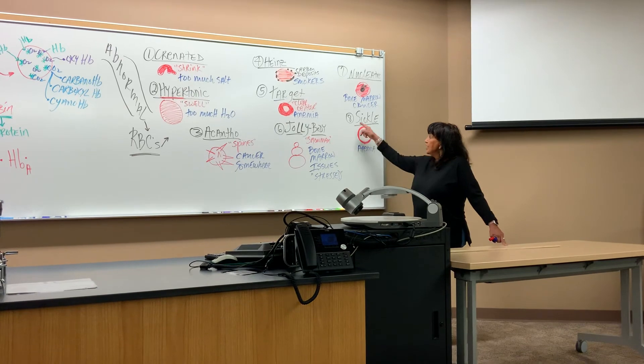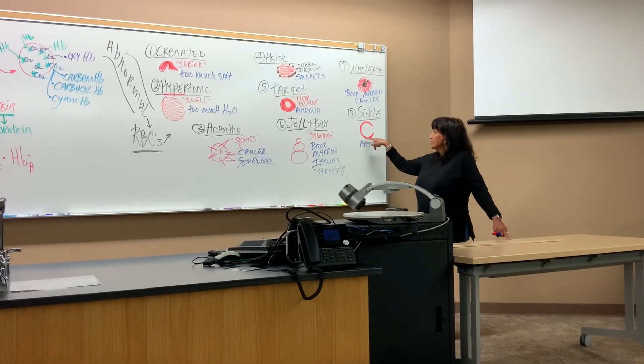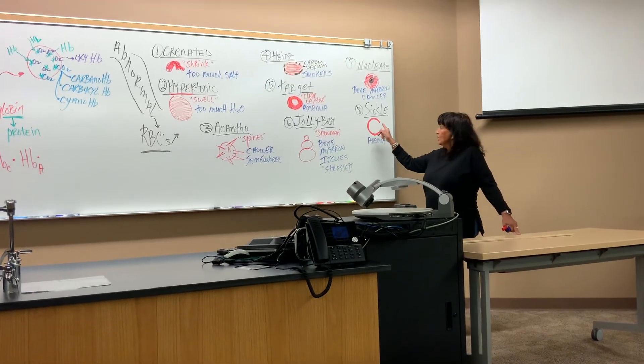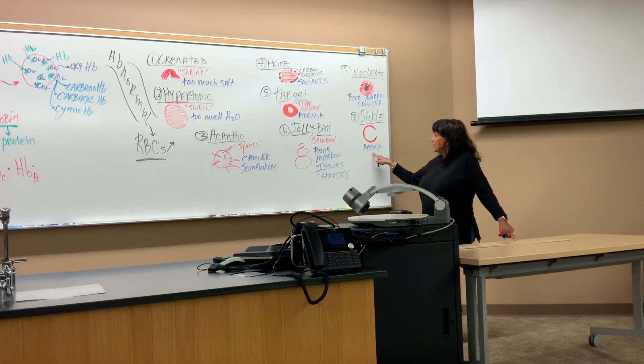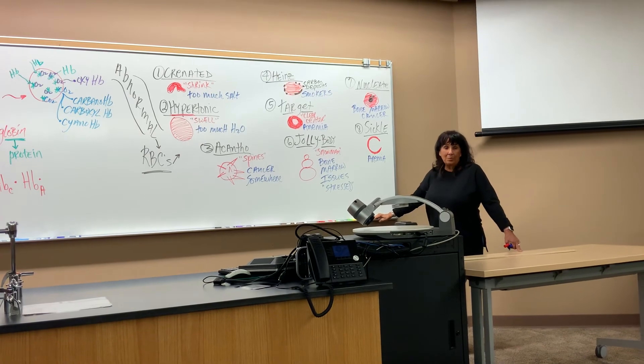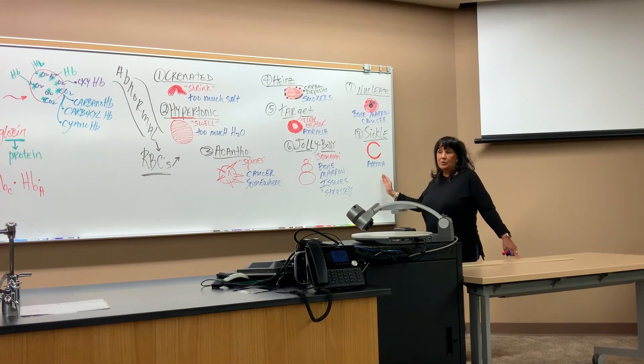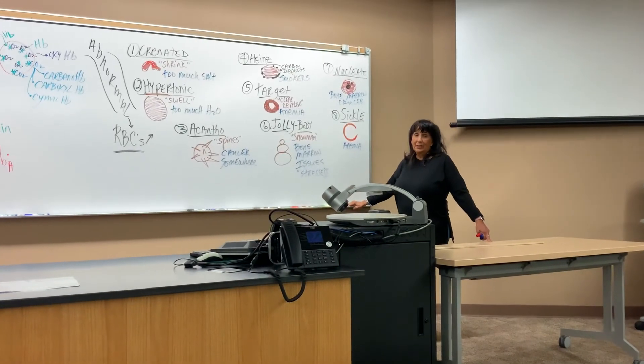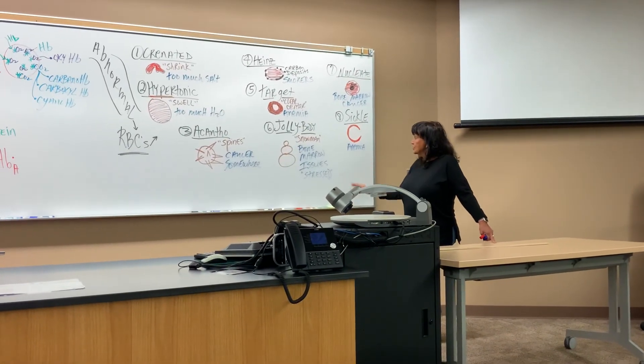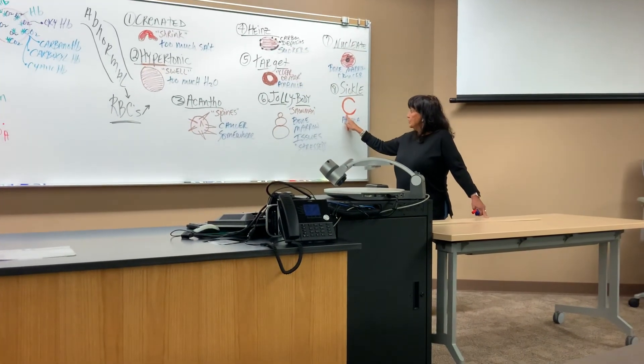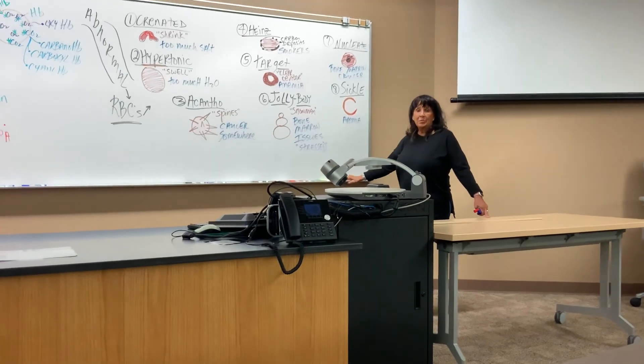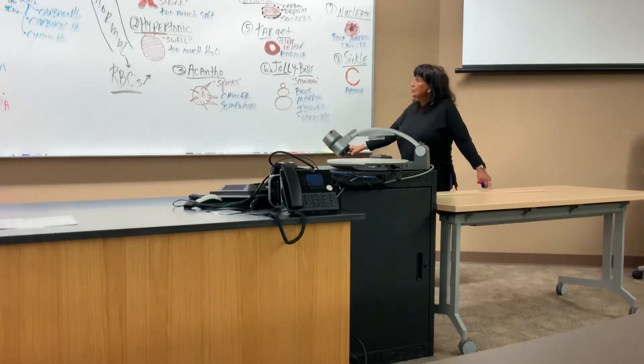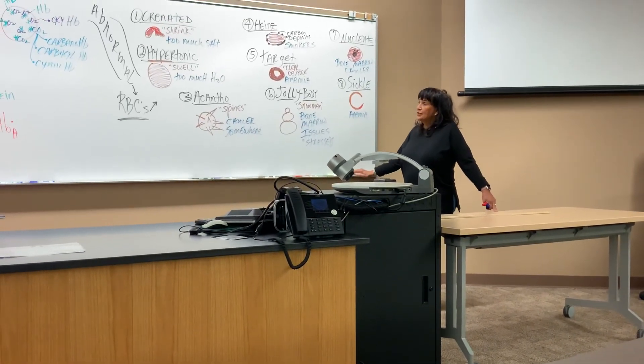The last one we have is the sickle shape. Sickle shape means C-shaped. The whole cell just sort of shrinks down and becomes C-shaped. That means you have a form of anemia. This form of sickle cell anemia can be very life-threatening. But they are making progress on gene therapy for this. And it's becoming much more curable if caught early. They do genetic testing for that also.